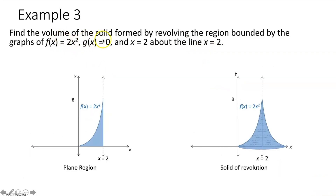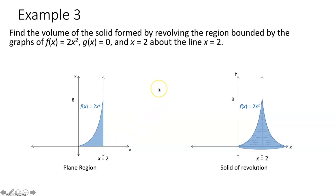Example three: find the volume of the solid formed by revolving the region bounded by f(x) = 2x², g(x) = 0, and x = 2 about the line x = 2. We're finding the volume of a solid created by revolving a region about an axis of revolution, giving circular cross sections — use the disk method. However, our axis of revolution is a vertical line, so instead of integrating with respect to x, we integrate with respect to y.